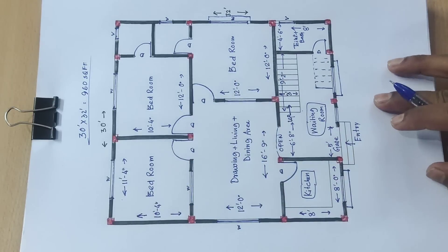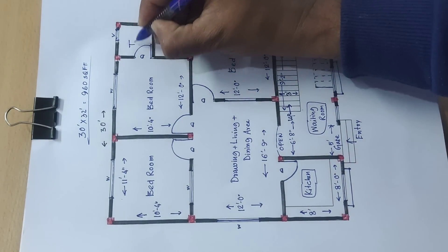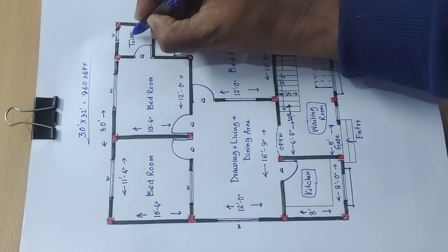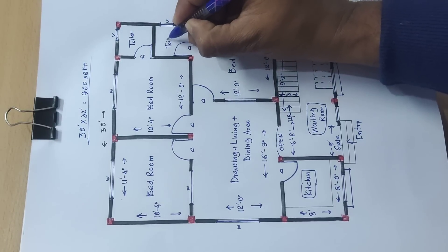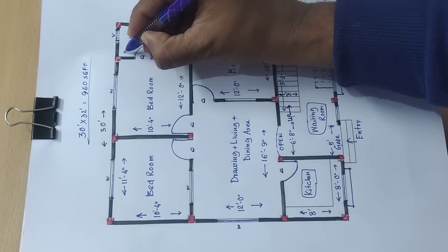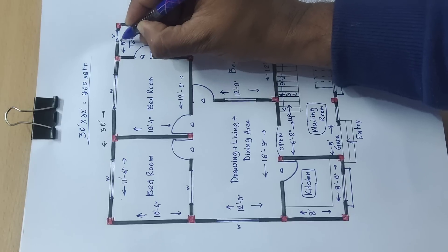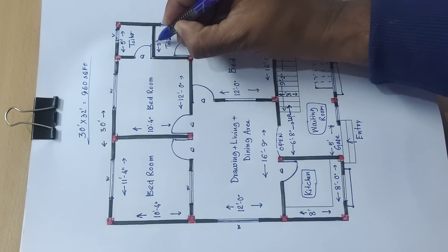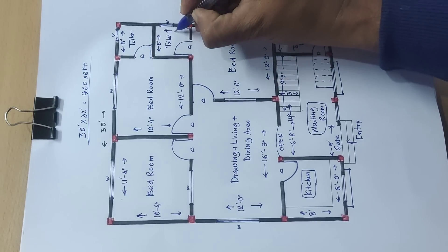Next, this is bedroom and distance 11 feet 4 inch, this side 10 feet 4 inch. And this is toilet and this is attached toilet.